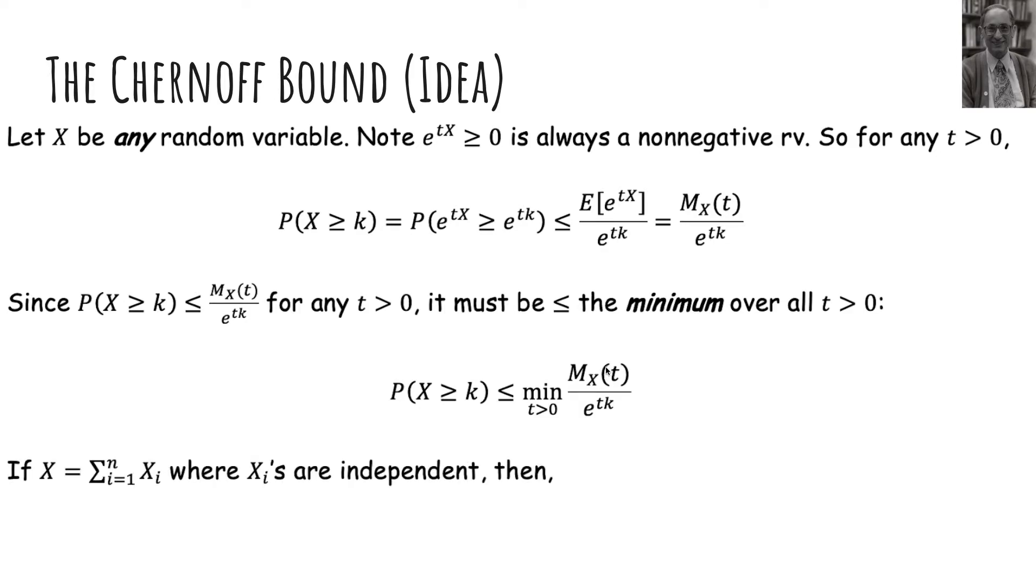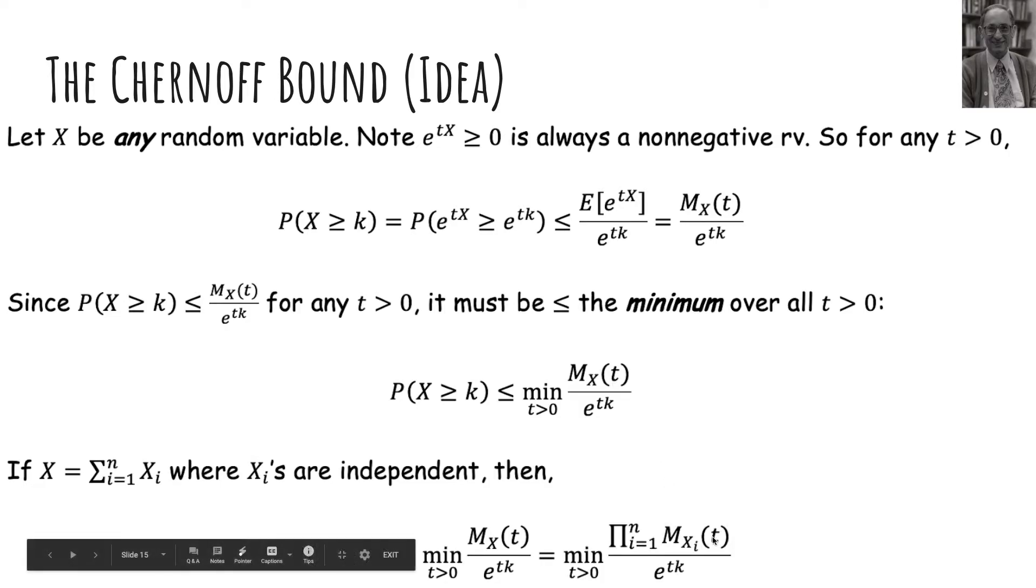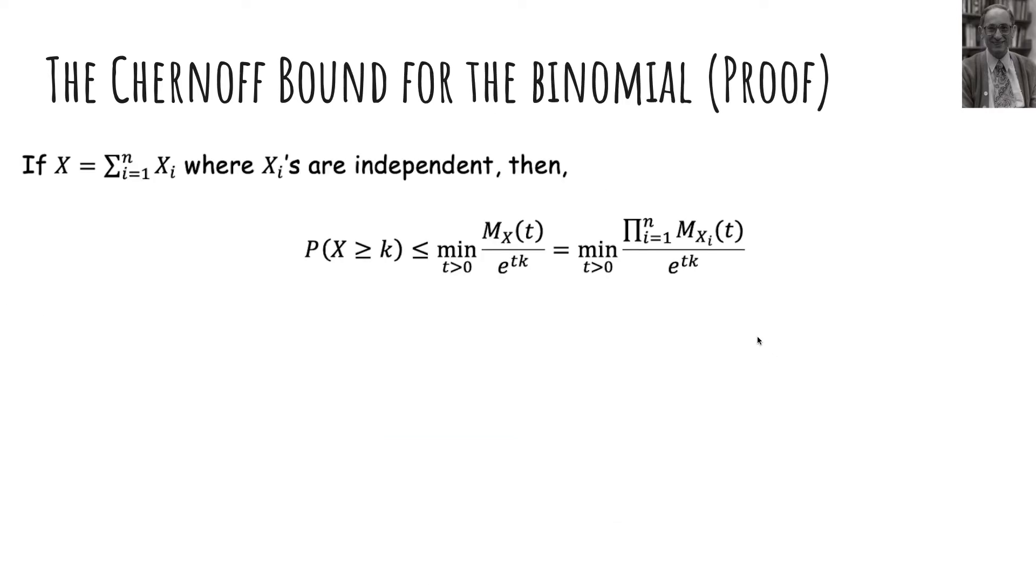So first, if x is a sum of independent xi's, then recall that the moment-generating function of a sum of independent variables is the product of the MGFs. So I just replaced the sum MGF with the product of the smaller MGFs.